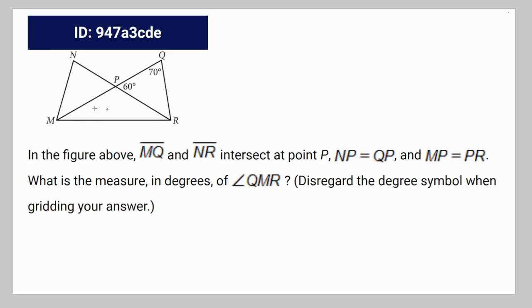Okay, so we have another geometry trick question. This one's decently simple. In the figure above, MQ and NR intersect at point P. MP is equal to QP and MP is equal to PR. What is the measure in degrees of angle QMR?